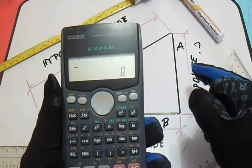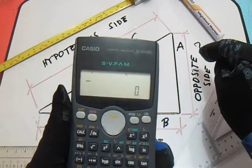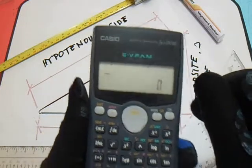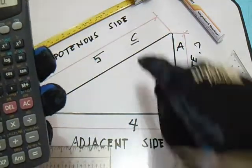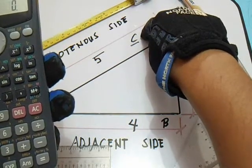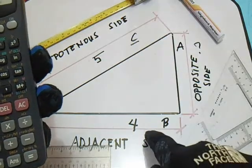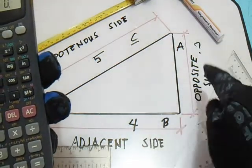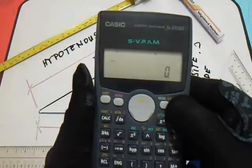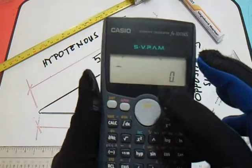Now our question is letter A. Our formula is C squared minus B squared equals A squared. So our C is 5.